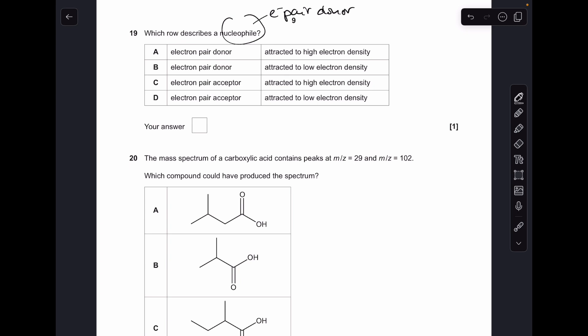Number nineteen: a nucleophile is defined as an electron pair donor, so that rules out C and D. There's just a generic part of a mechanism involving a nucleophile, and you can see the electron pair is being donated in this case to an electron-deficient carbon, so obviously that's got low electron density, so it was option B.